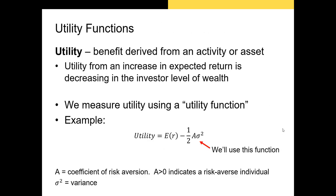Now risk-aversion is closely tied to utility functions. As I hope you remember from your economics courses, utility is the benefit a person derives from some activity or asset. People are utility maximizers — they want to increase their utility as much as they can. As investors, we want to measure utility. We do this by using a utility function. A utility function is a formula that has utility on the left-hand side and all of the components that affect a person's utility on the right-hand side.